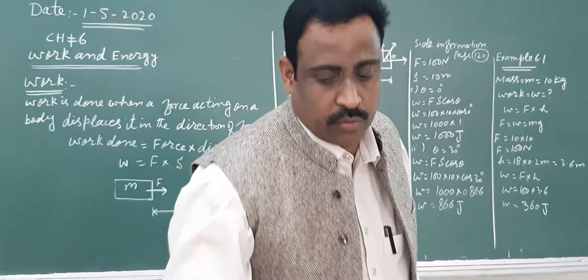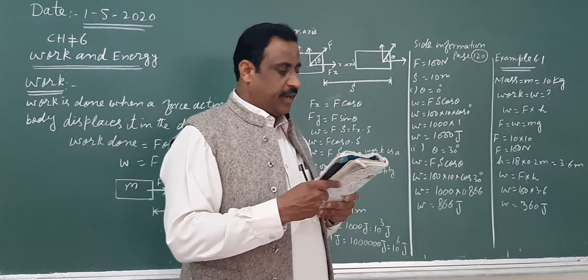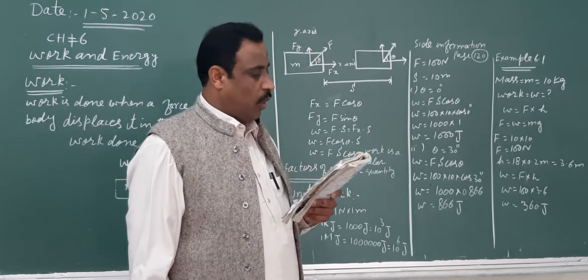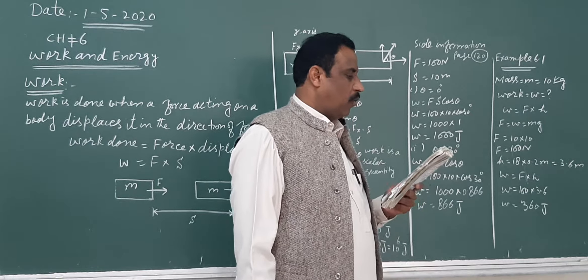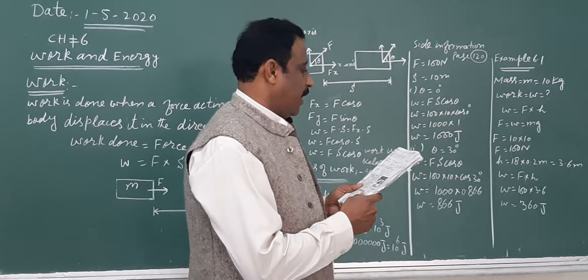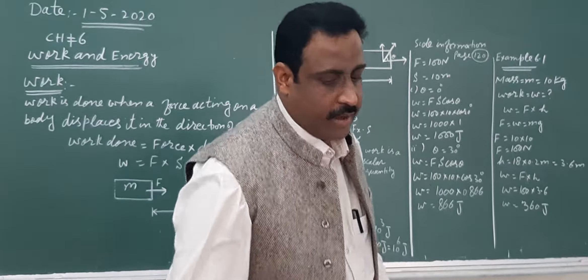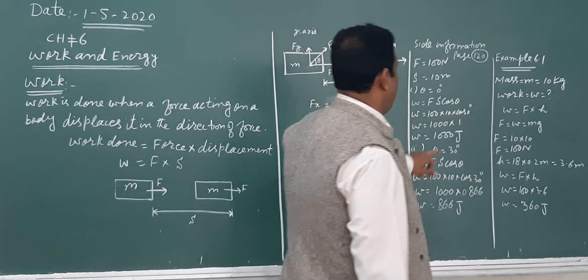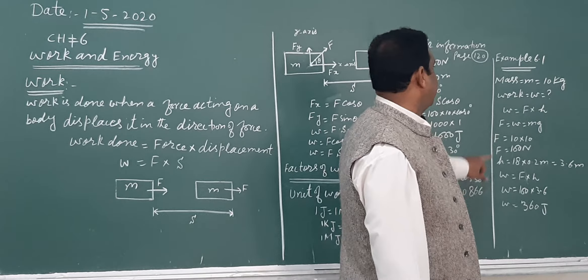We have example 6.1. A boy carries a 10 kg bag up stairs to a height of 18 steps, each 20 centimeters high. Calculate the amount of work done to carry the bag. G value is 10 meters per second squared. Mass M = 10 kg, work W = ?